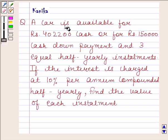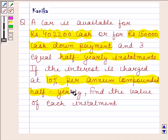The question says a car is available for Rs 402,200 cash or for Rs 150,000 cash down payment and 3 equal half-yearly installments. If the interest is charged at 10% per annum compounded half-yearly, find the value of each installment.